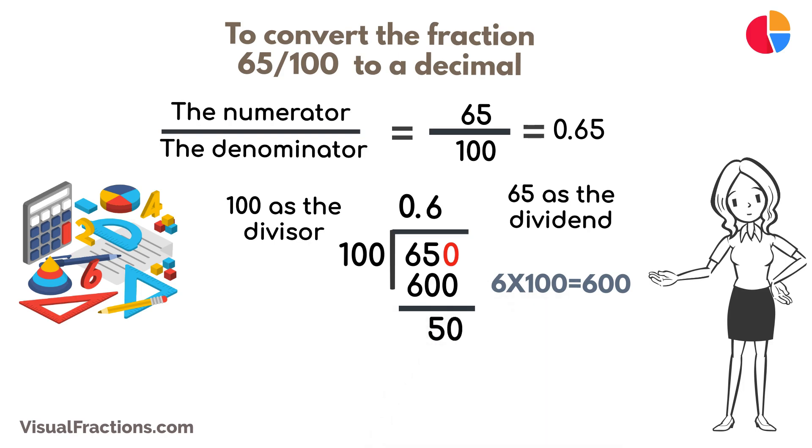Next, we add another 0 to the remainder, making it 500. How many times does 100 go into 500? Exactly 5 times. We write 5 after the decimal point, making it 0.65.